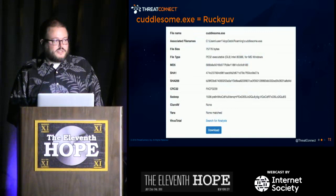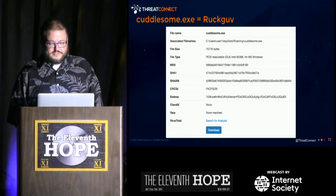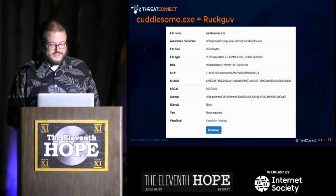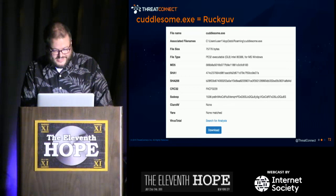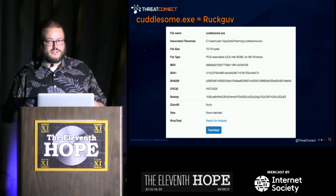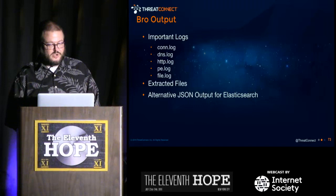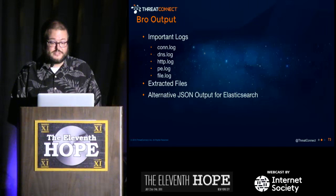Of course I'm curious about what actually happened, so we're going to send that particular file over to Cuckoo to see what's happening. This is the dropper: cuddlesome.exe — it's a Ruck.gov dropper, which also reinforces that it's Man1. Bro output includes: conn log, DNS log, HTTP log, extracted files, and you can change the output to JSON so you can consume it with Elasticsearch very easily.